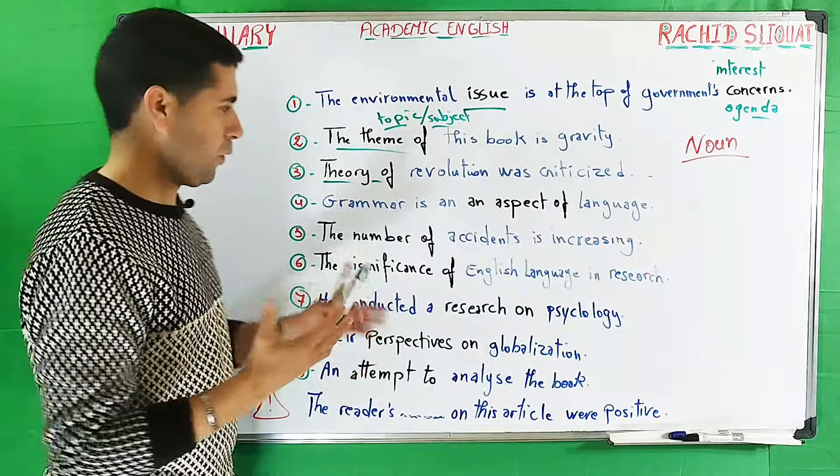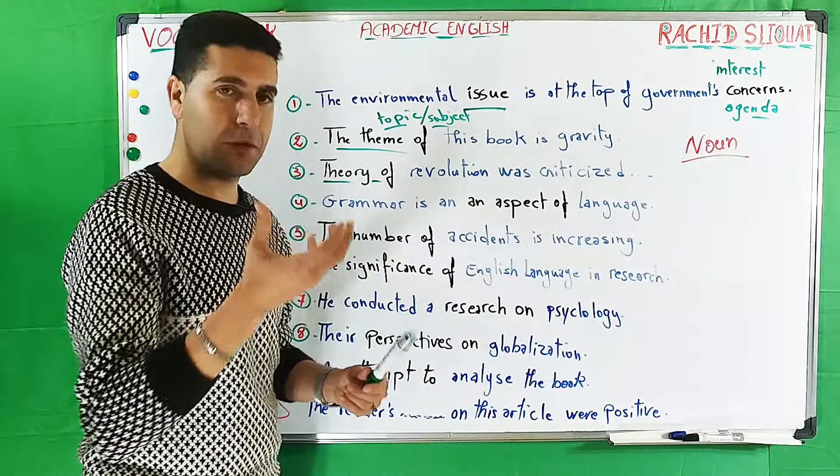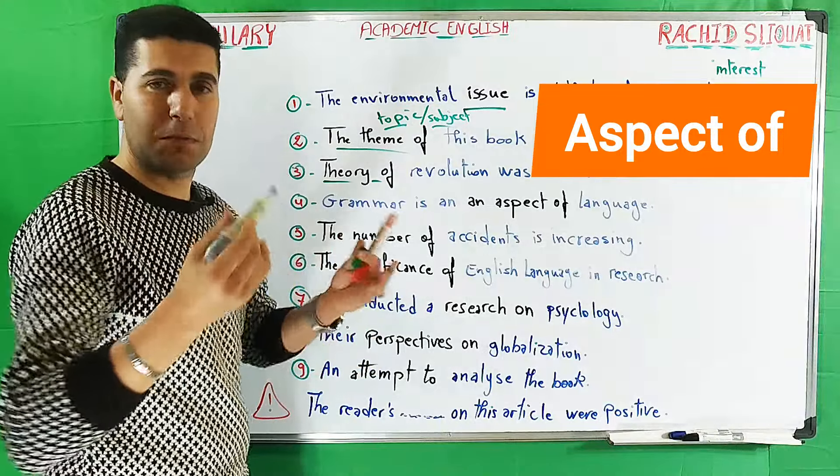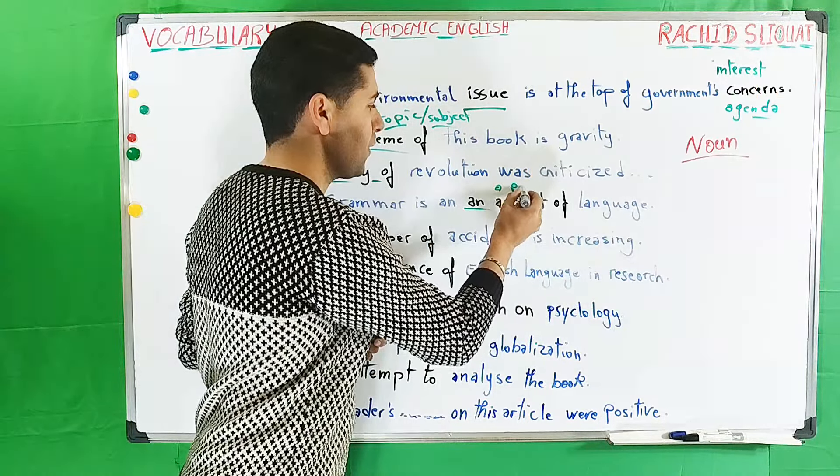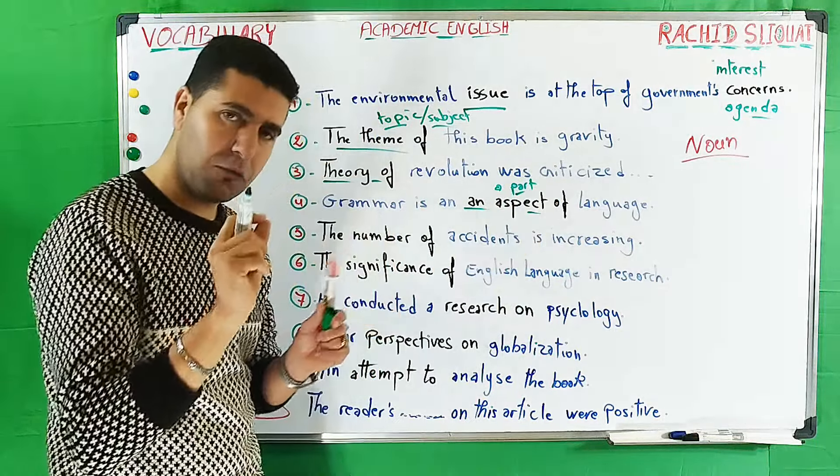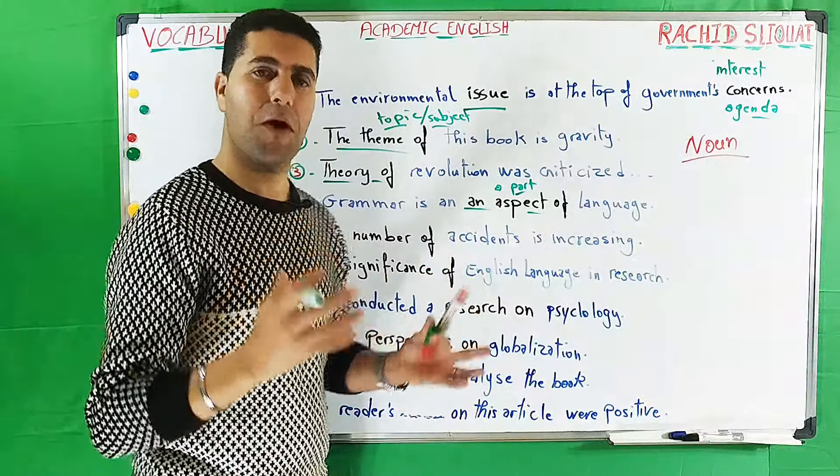Number four: 'Grammar is an aspect of language.' We can say grammar is an aspect of language or grammar is a part of language. So aspect of or part of—this is a very important expression to remember.